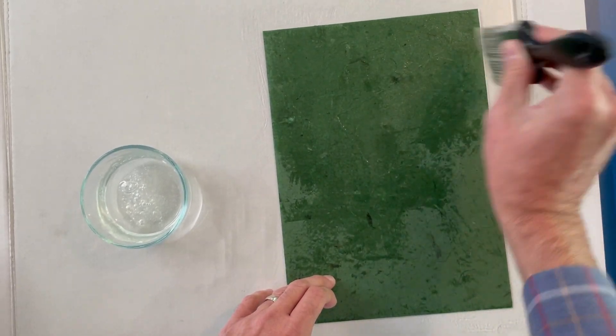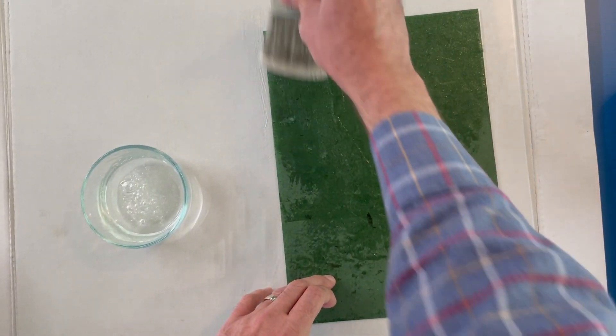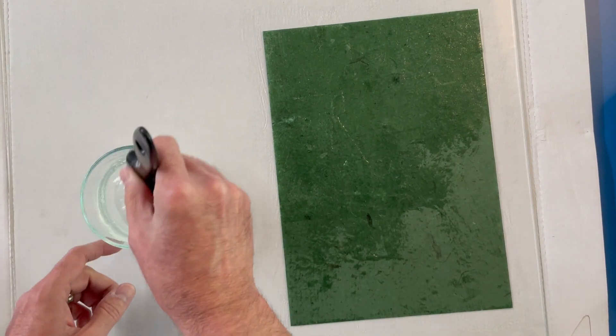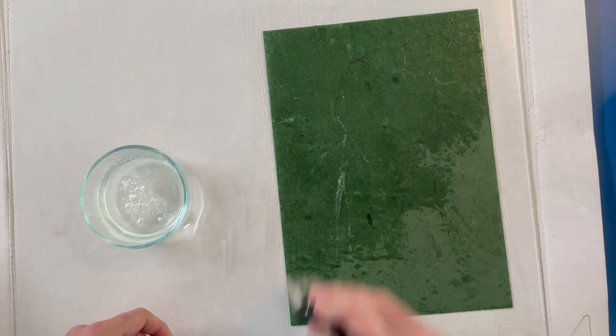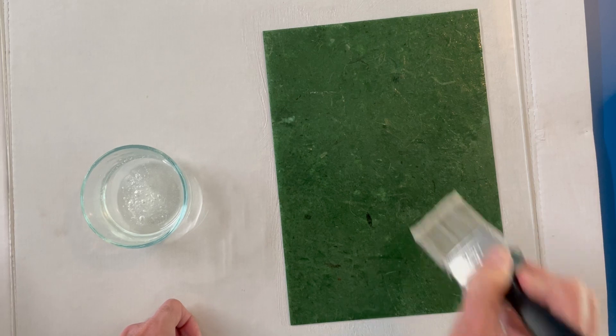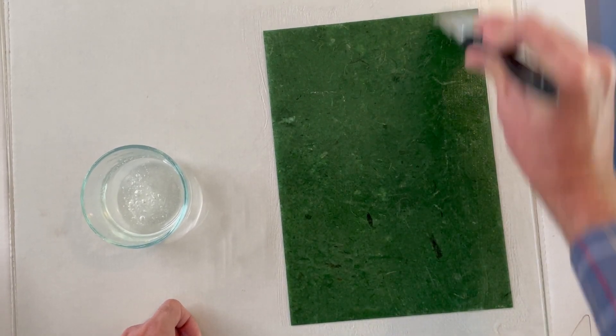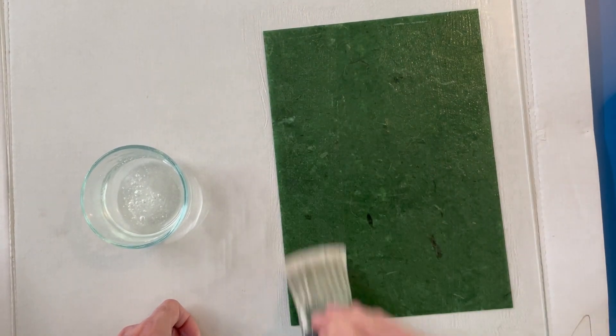Again, letting it soak all the way through, all the way down to the glass, using the brush to smooth things out and force out any air bubbles and also force the mixture to soak through both layers of paper.